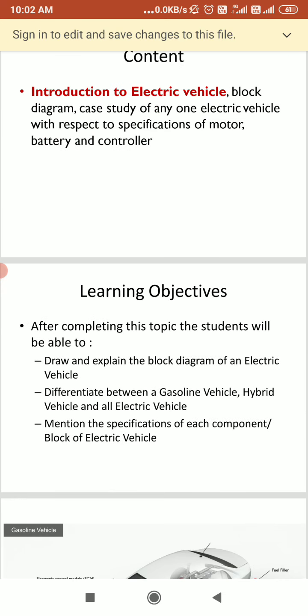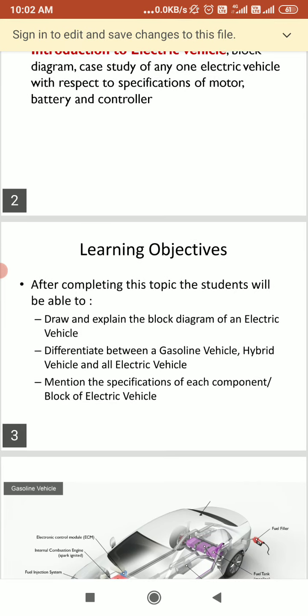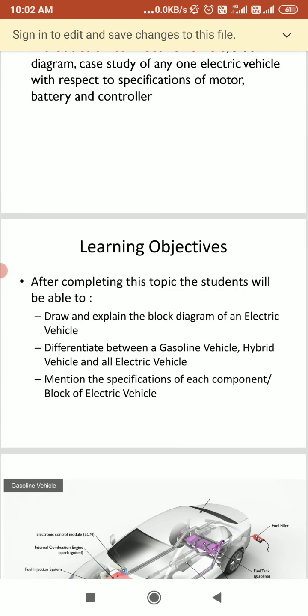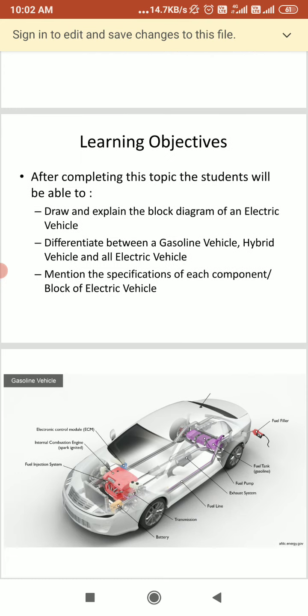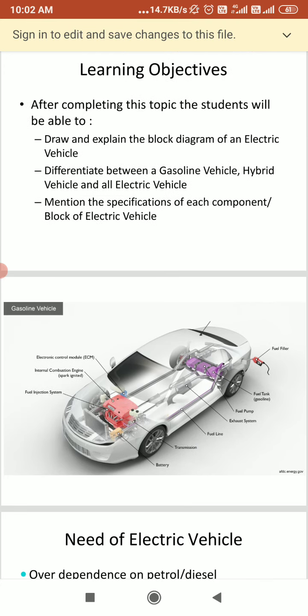So these are our learning objectives. Here we are supposed to see the block diagram of the electrical vehicle and we are supposed to differentiate between the electrical vehicle and the gasoline hybrid vehicle. So we will see these things one by one.